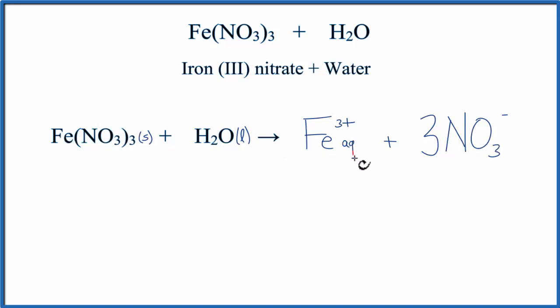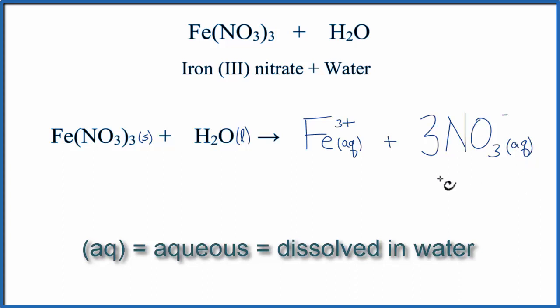So we can write Aq after the ion. Aq, that means aqueous or dissolved in water. Because of that, we don't need to write H2O on this side of the equation. These are dissolved in water. And that's the equation for Fe(NO3)3 plus H2O.